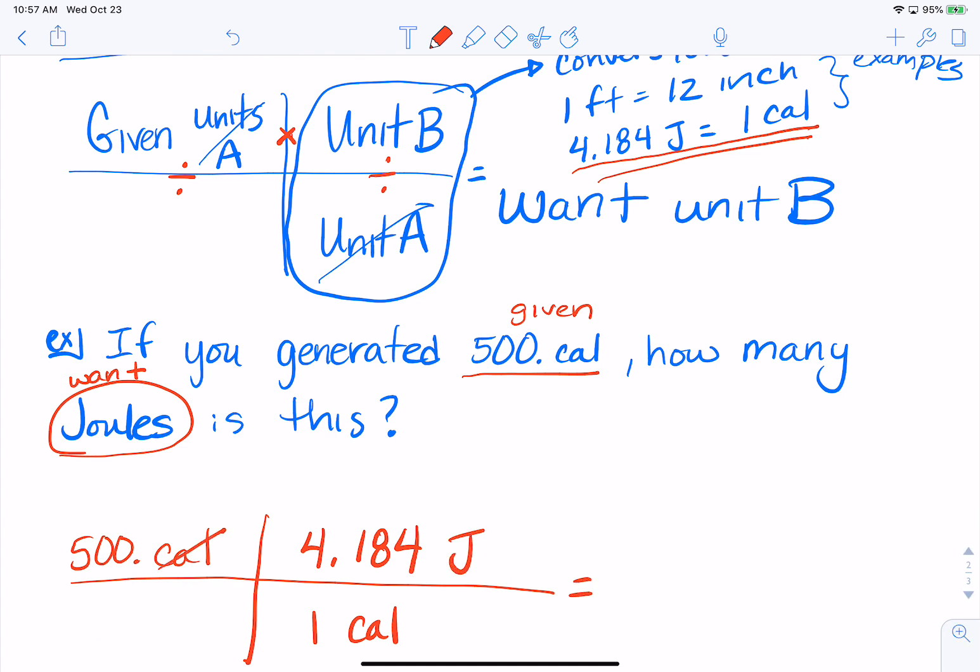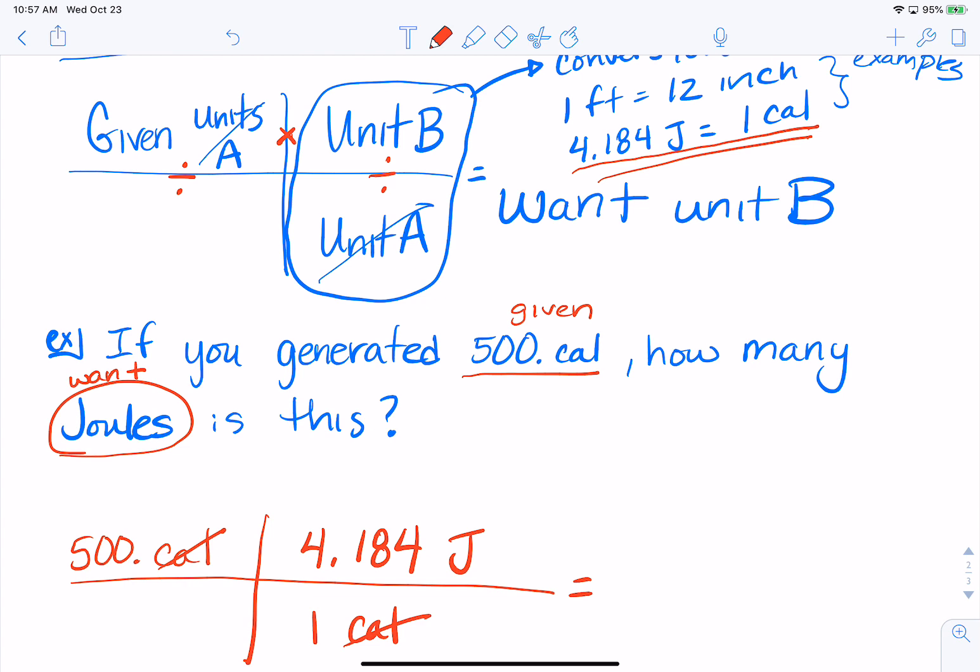Does someone have a calculator? Could they calculate 500 times the 4.184? What do we put on the bottom left? Nothing. It's an imaginary one if you want. 2,092. 2,092 exactly? Really? Well, that's lucky. Can I get a second on that? Alright. So this is in joules.